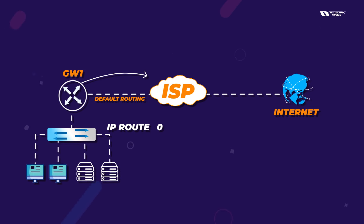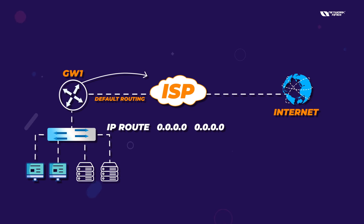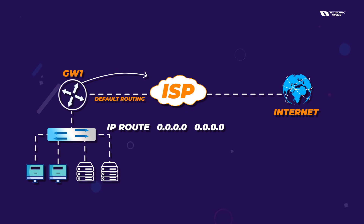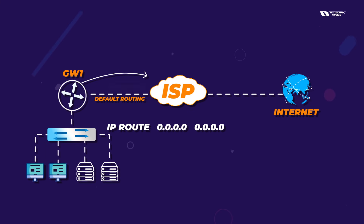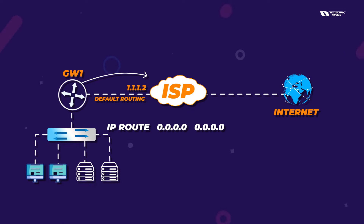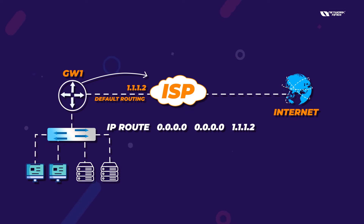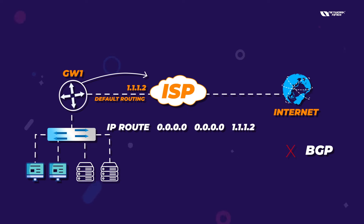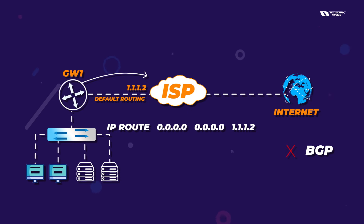You use the command 'ip route 0.0.0.0 0.0.0.0' meaning any network, any subnet mask — forward all traffic to the ISP. For example, if the ISP IP is 1.1.1.2, all traffic goes there. In this single-connection scenario, BGP is not required.